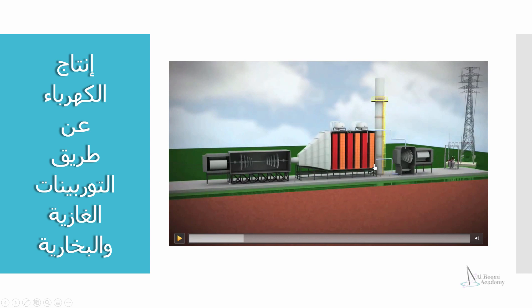Of course, the steam turbine is here, and it will produce the water, or low-temperature steam, and it will be sent to the steam turbine. The steam turbine is running and it will produce electricity. The electricity from this generator will be connected to the company.